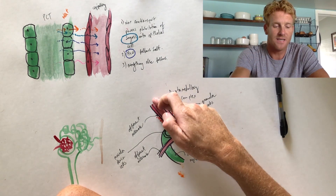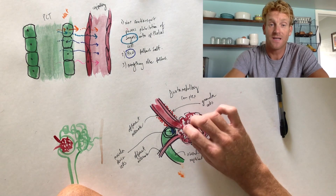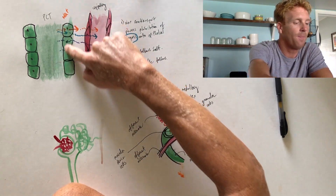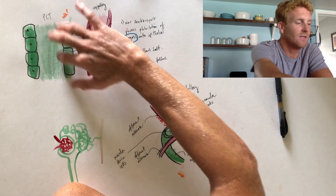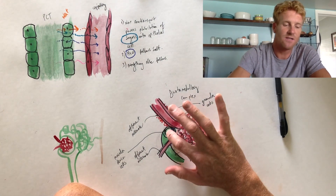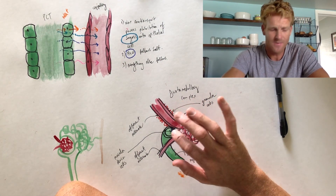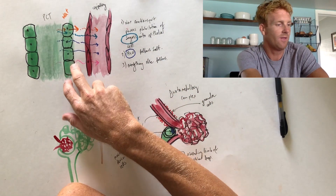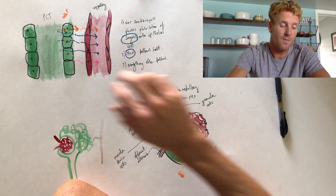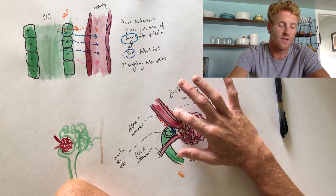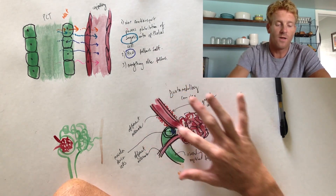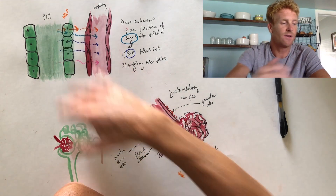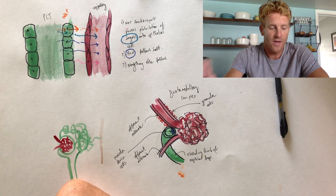If salt is too high, the macula densa cells signal the granular cells — special smooth muscle cells hanging out in the walls of the afferent arteriole. They contract and squeeze the afferent arteriole, making it smaller. Less fluid enters the glomerulus, less gets filtered, and the speed of fluid through the entire nephron slows down. That gives the epithelial cells more time to reabsorb what they need, reducing the salt concentration in the tubule by the time it reaches the juxtaglomerular complex.